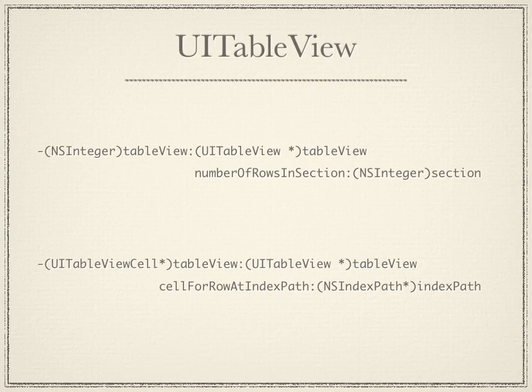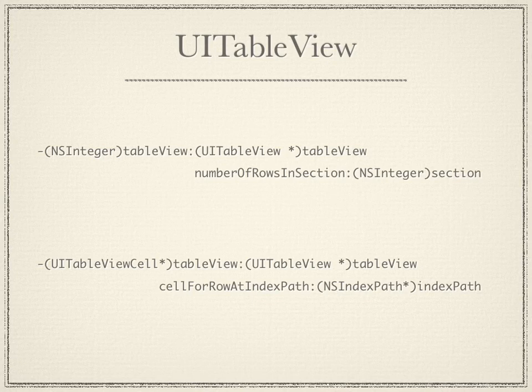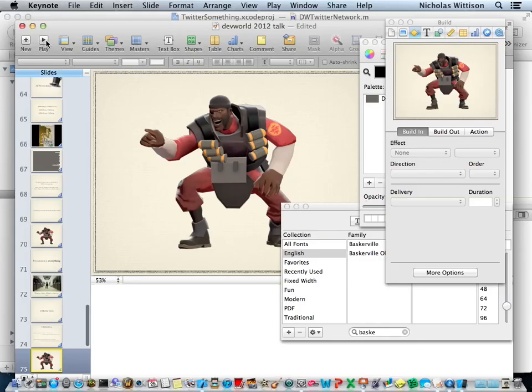The two delegate methods are: tableView:numberOfRowsInSection: which tells the table how many rows to create, and tableView:cellForRowAtIndexPath: which creates a cell and passes it back to the table view to display for each row. We're going to create a UITableView and UITableViewCell in the storyboard. If you haven't used storyboards before, you're really missing out — they are absolutely incredible, unless you have no screen space in which case they're terrible.